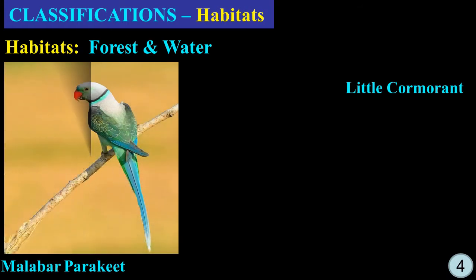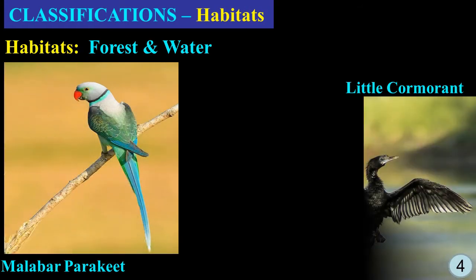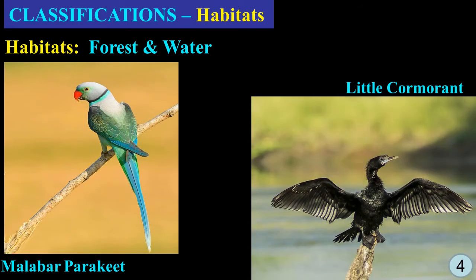Now we are going to classify the birds based on habitats. For example, Malabar Parakeets are forest birds. A bird that lives in water is a water bird — for example, the little cormorant.